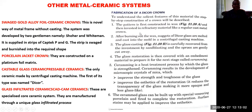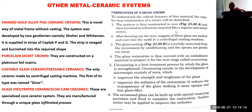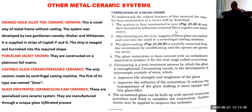Other metal ceramic systems. There are many others. We have gold alloy for a ceramic crown — it's a novel idea, not common today. This is a novel way of making metal porcelain without casting. The system was developed by two gentlemen. An example of a brand is CAPTEC P and G. The strip is swaged and punched into the required shape — you don't need all the firing processes. It is a swaged ceramic system.